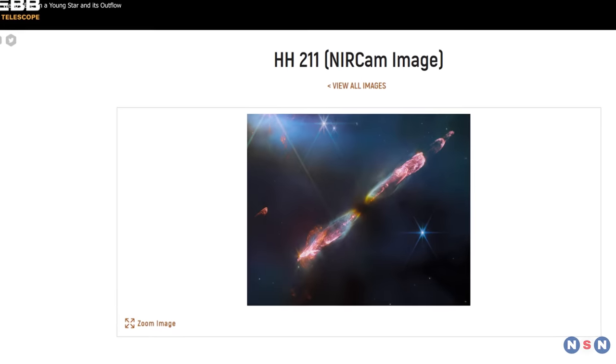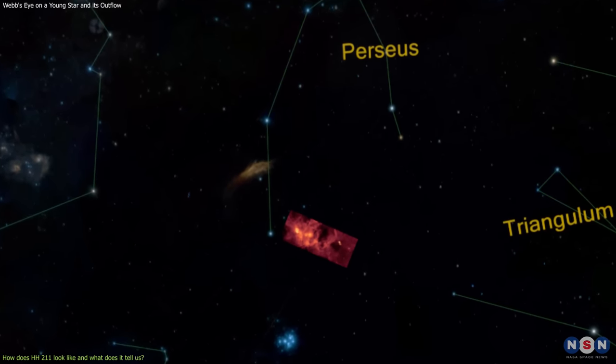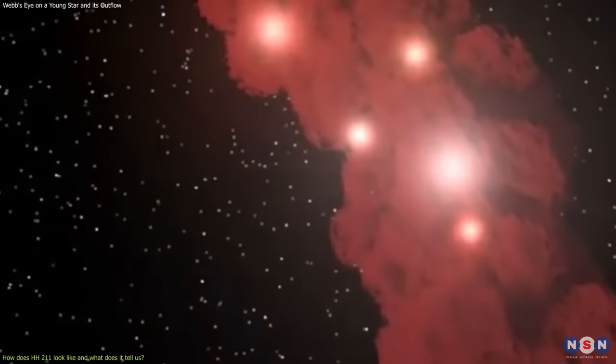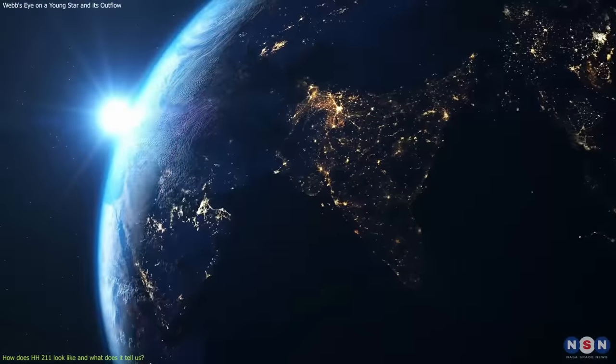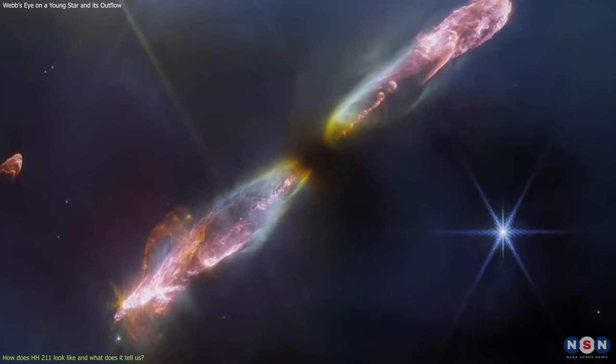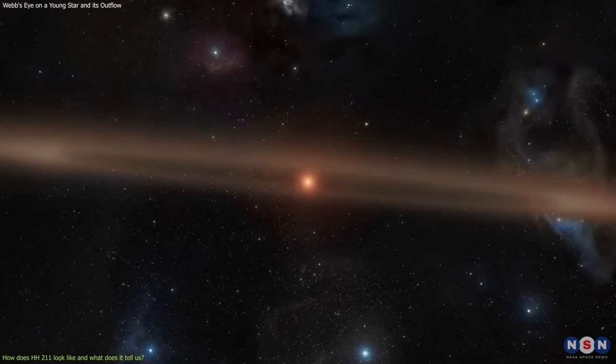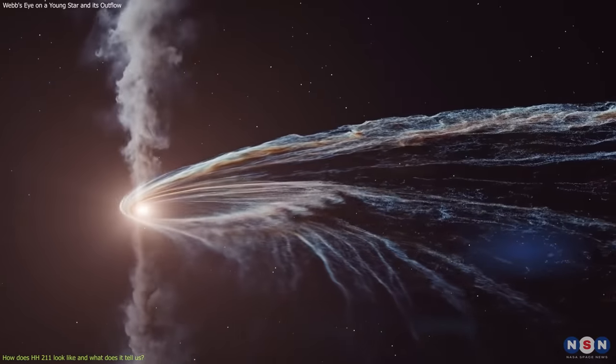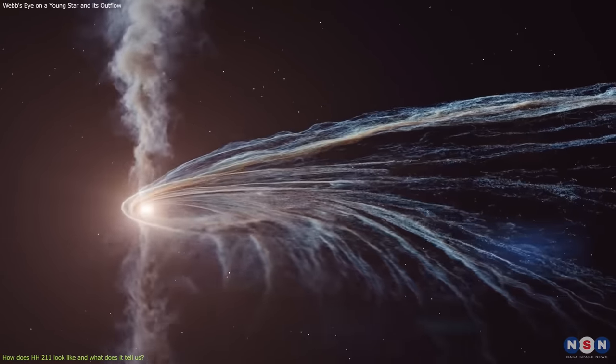The star that Webb observed is called HH 211, and it is located in the Perseus Molecular Cloud, a giant cloud of gas and dust where many stars are born. This star is about 1,000 light-years away from Earth, which means that we see it as it was 1,000 years ago. It is very young, only about 10,000 years old, which is a blink of an eye in cosmic terms. The star is still growing by accreting material from a disk of gas and dust that surrounds it.